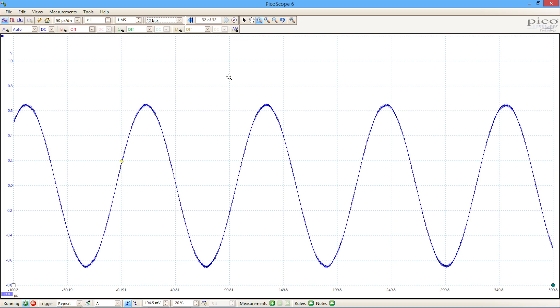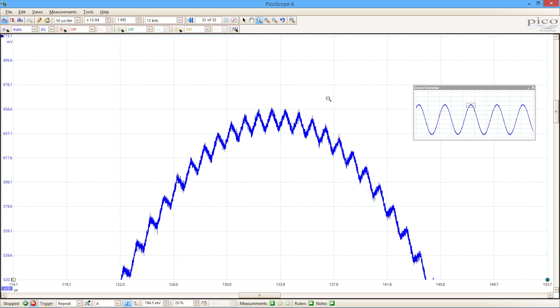So the PicoScope now has reconfigured itself. It's reconfigured the A to D converters to acquire with 12-bit resolution and we can do the same zooming in to look at the characteristics of the noise. And now we're starting to see much more information. We're starting to see that the wave shape of the noise that is riding on the top of that waveform isn't random. It's actually triangular and I can use the rulers to make a measurement on the characteristics of that triangular noise.